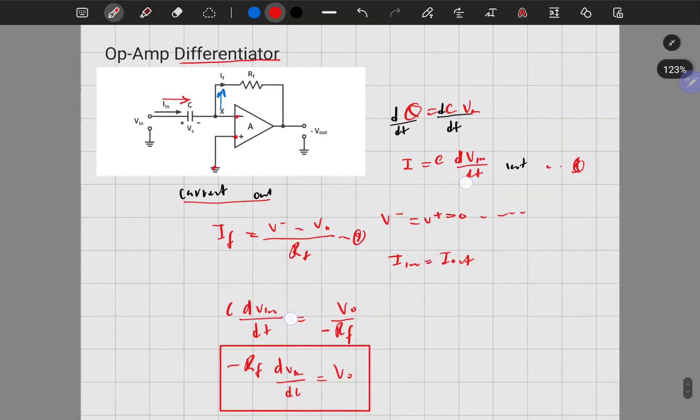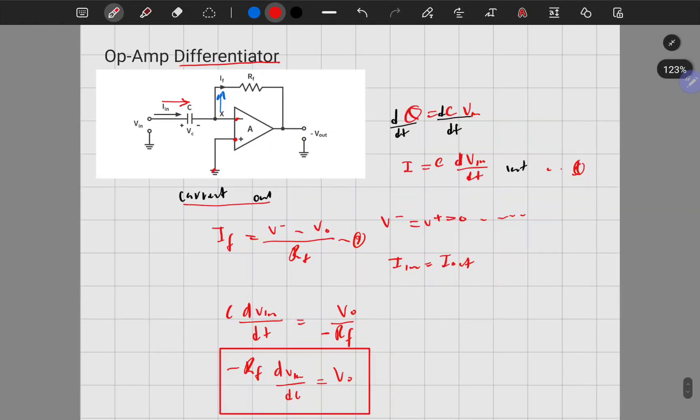You get the whole derivation because it's literally examinable. You start here, talk about the current flowing in, solve for current, take the derivative of both sides, get current out, equate those currents, and land into your answer. You did differentiate, so that's why it's called a differentiator op-amp. Thank you.